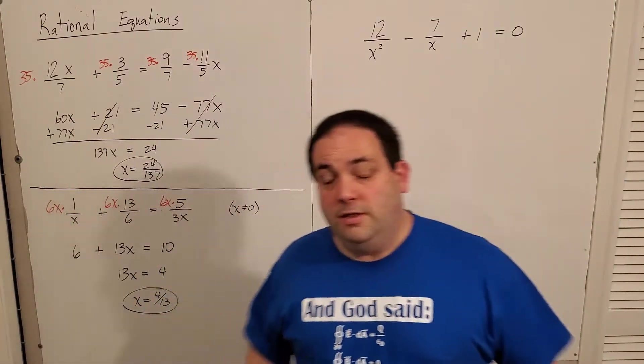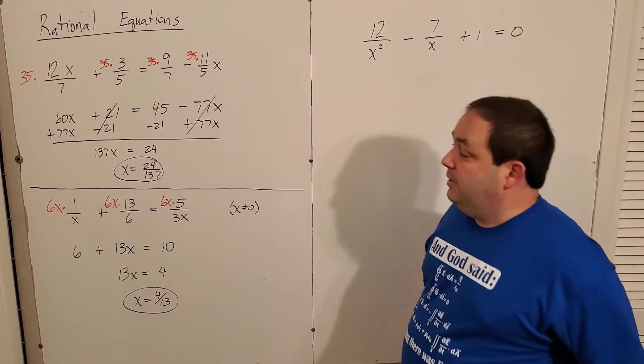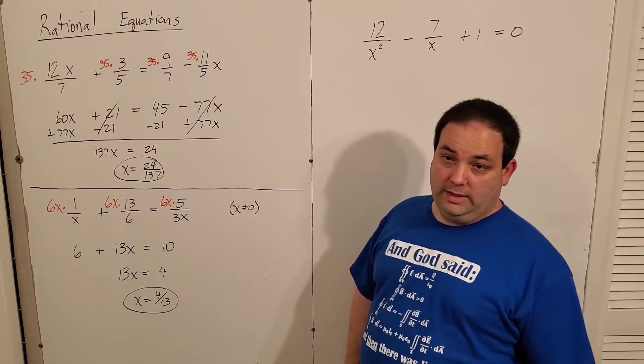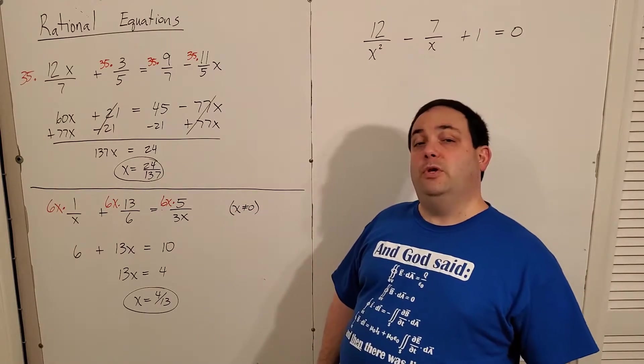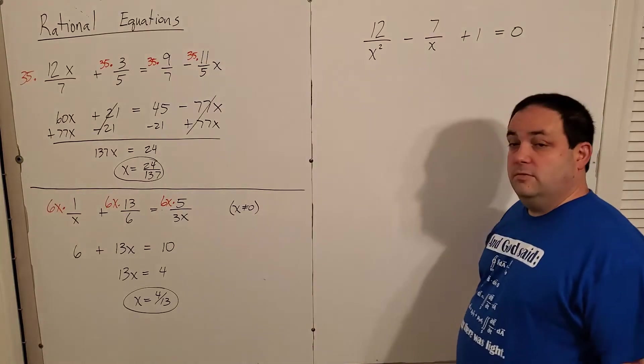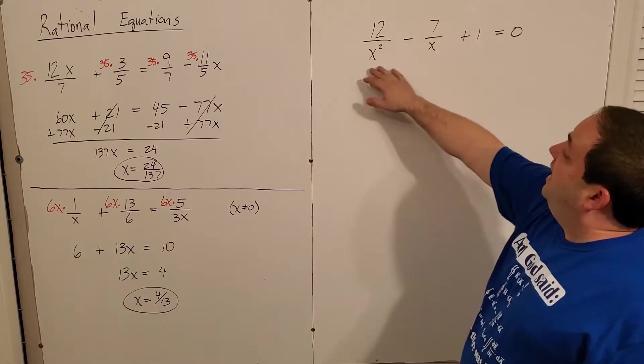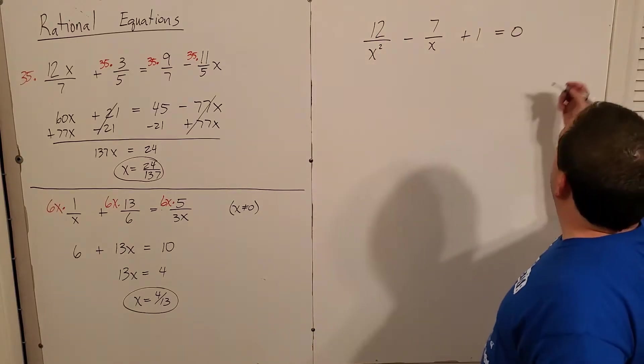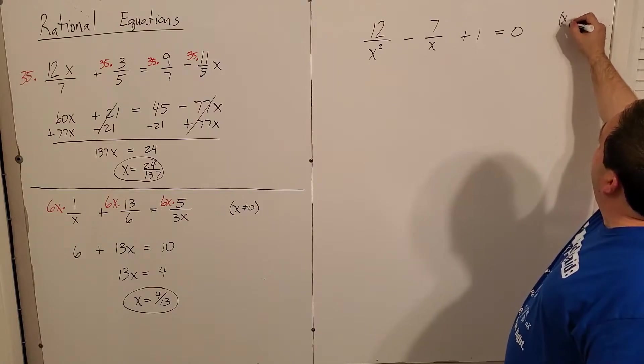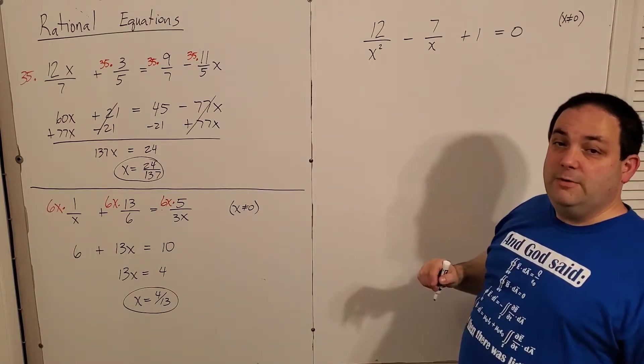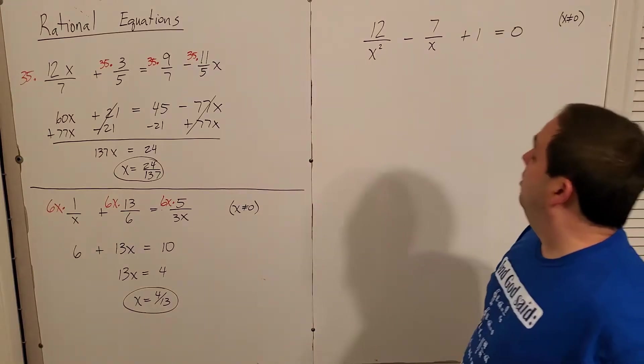Now, these don't always have to end up in linear when you're converting out of rational form like this. They can also end up in quadratic solving method. Here's one of those right here. First of all, I'm noticing I have x in the denominator. So I'm going to remind myself, hey, by the way, x can't be zero because that would be a division by zero.